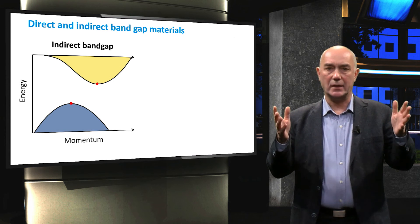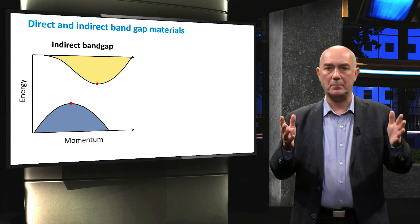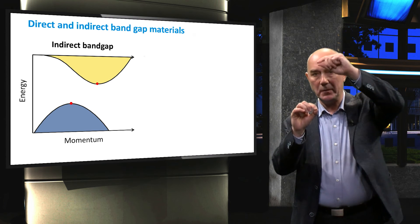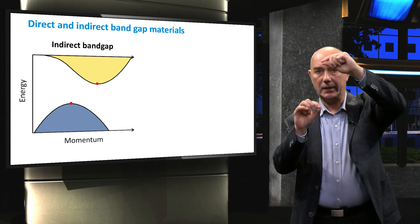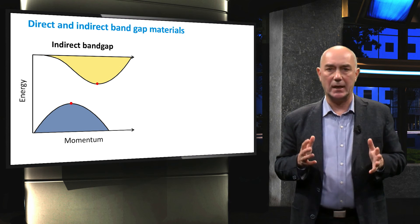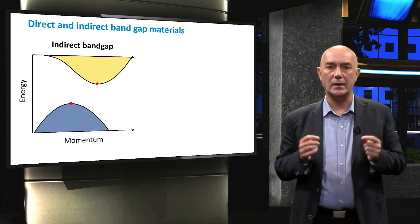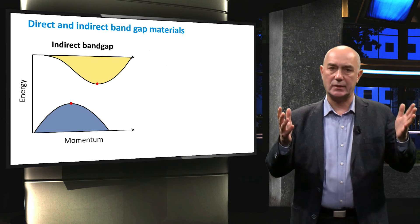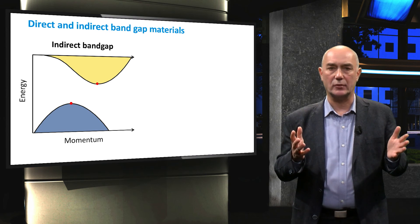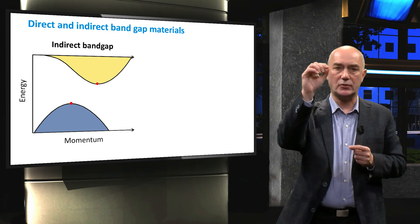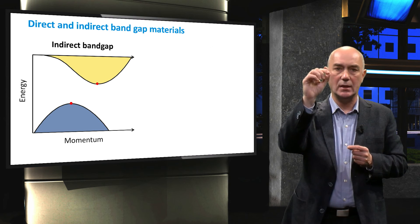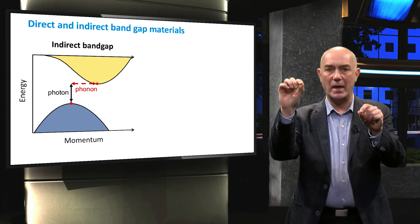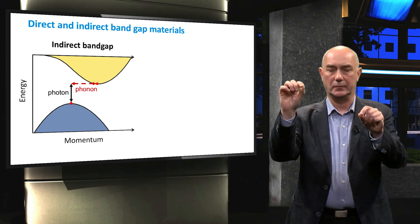For an indirect band gap, the highest point of the valence band and the lowest point of the conduction band, indicated by the red dots, are not aligned. This means that exciting an electron from the valence to the conduction band requires energy provided by a photon and momentum provided by a phonon.